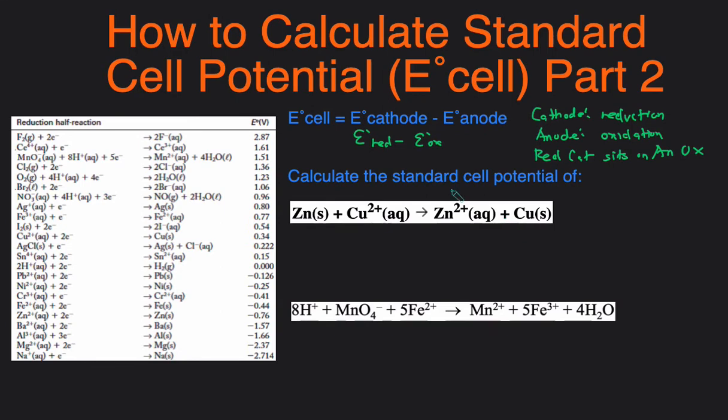So let's assign oxidation numbers to each of these elements to determine what's oxidized and reduced. Zinc is zero because it's a lone element. Cu2+ is going to be positive 2 because that's a positive 2 charge. Zn is positive 2 and then Cu is zero. So based on this, we can say that the oxidized element is going to be Zn and then the reduced element is going to be copper.